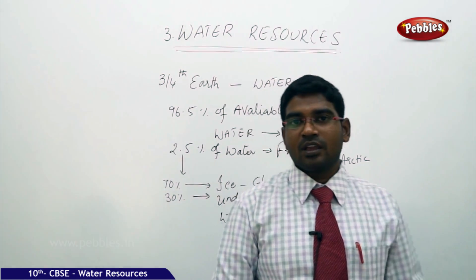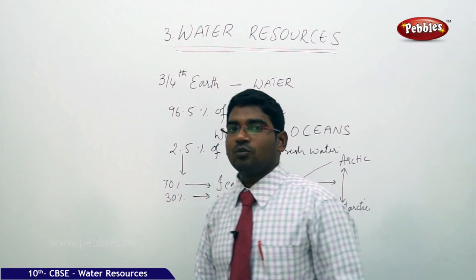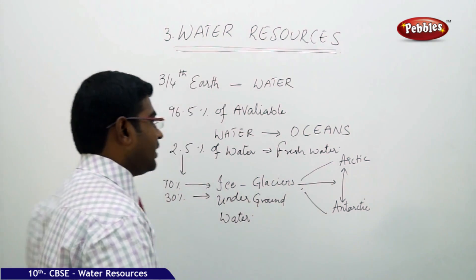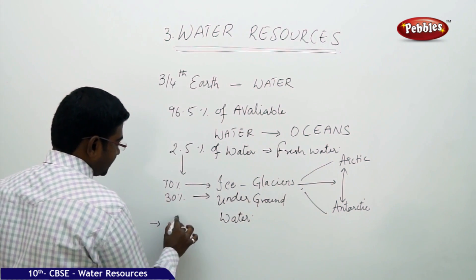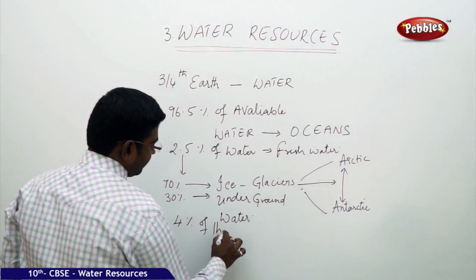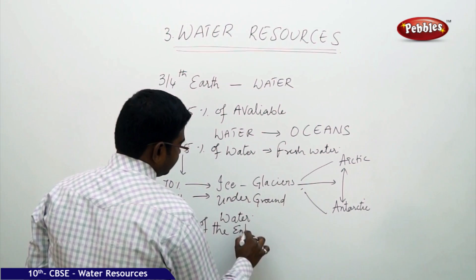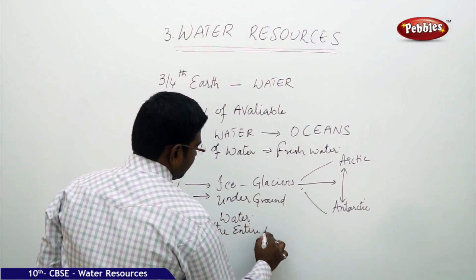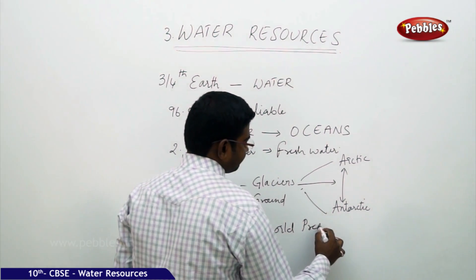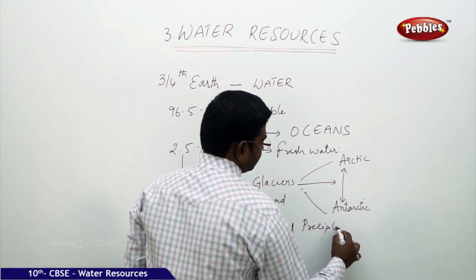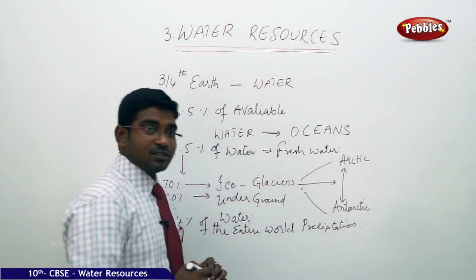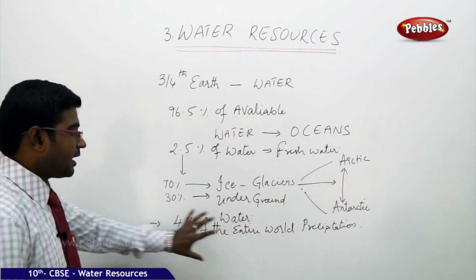Now, when we look at the findings on water availability, India receives 4% of the entire world's precipitation, ranking herself 133rd in the world in terms of precipitation received.